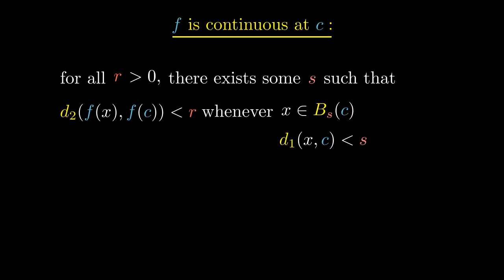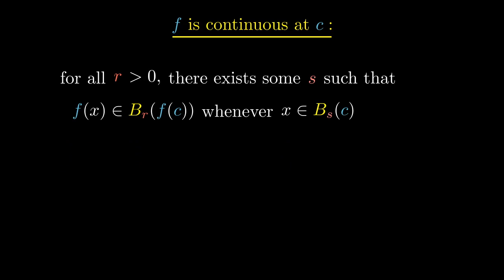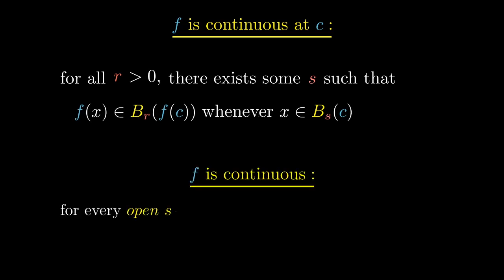And where we say the distance between f(x) and f(c) is less than r, we can instead say f(x) is in the set of all points whose distance from f(c) is less than r. Then the notion of the set of all points whose distance from some particular point is less than some number is condensed even further and is replaced by an even more abstract idea: the so-called open set.